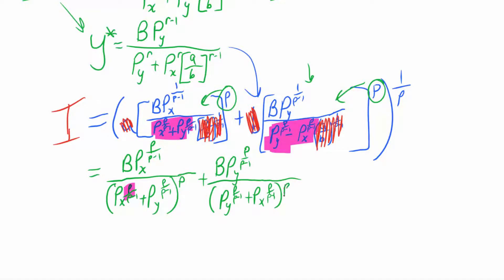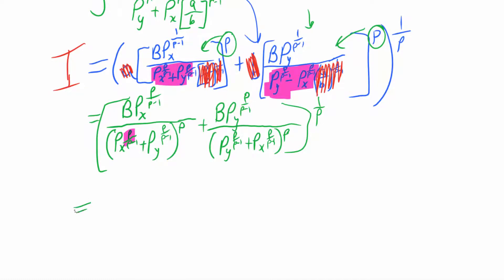Plus we're going to have the same kind of thing over on this side. We're going to have b price of y over one over ρ minus one, except when we distribute that power we multiply and we get ρ over ρ minus one. And then same thing, let's just keep that all together on the bottom and raise that to the ρ. Now we've got all that on the inside. Now we want to raise everything to the one over ρ.